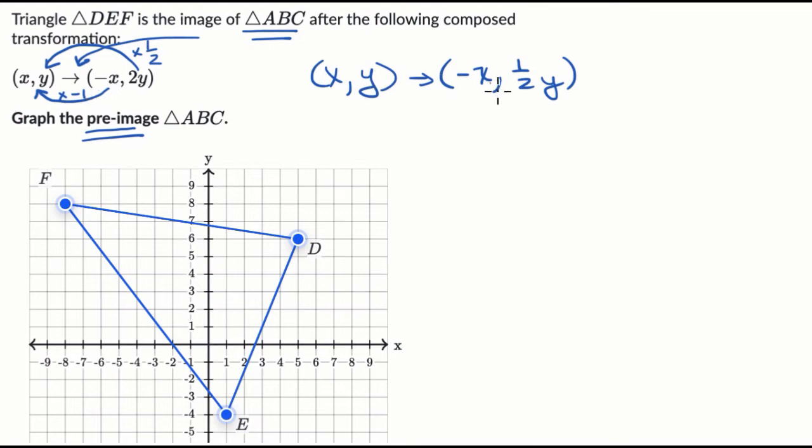So let's just do that. So this F right over here is at the point negative eight comma eight. So if we apply this transformation, this negative eight becomes a positive eight. And then this other eight, you take half of that, you get a four. So it becomes positive eight and four. So it goes over there. That is eight comma four.